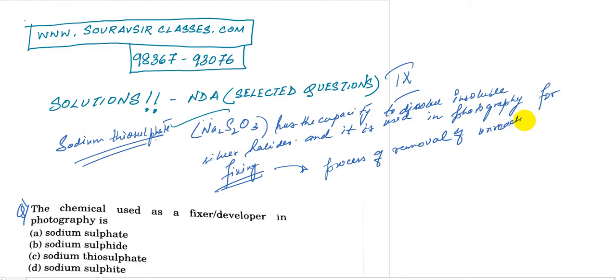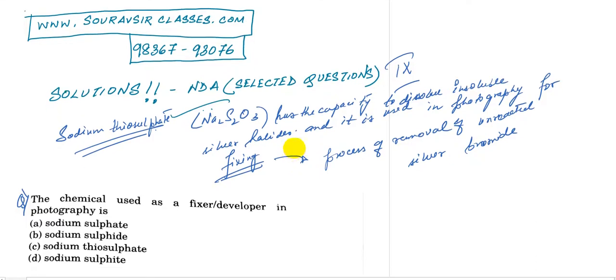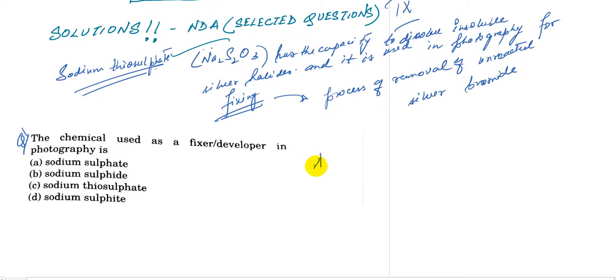unreacted silver bromide. And the reaction looks somewhat like this: AgBr (silver bromide) plus Na2S2O3, this will give Na3